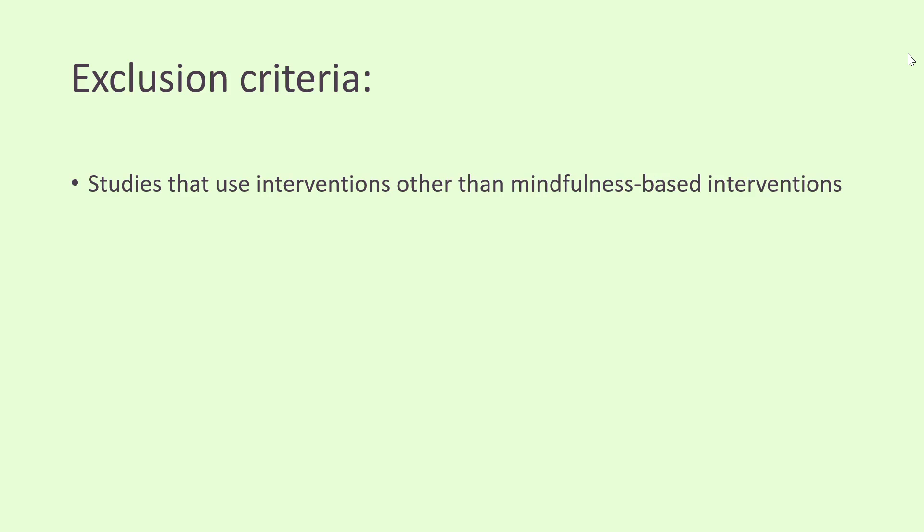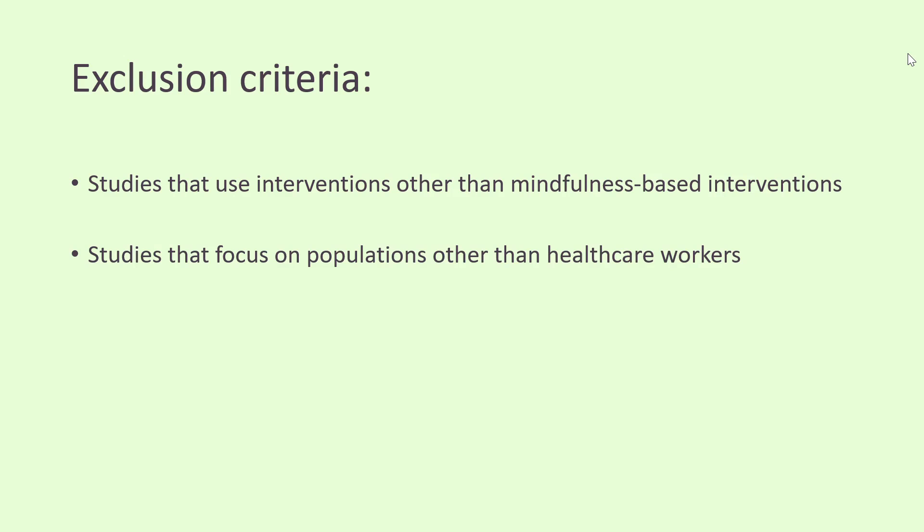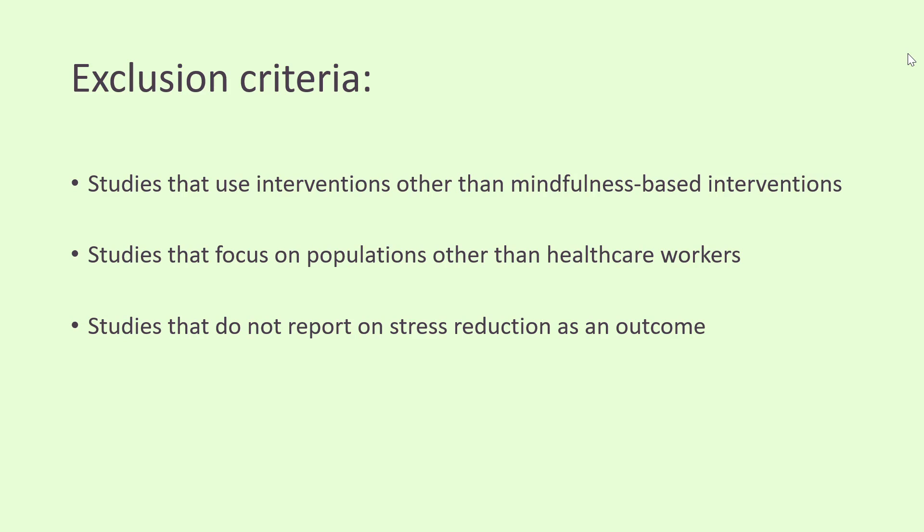On the other side, we have our exclusion criteria — these are the characteristics or qualities that would disqualify a study from being included. Studies that use interventions other than mindfulness-based interventions should be disqualified. We don't want to muddy the waters; we want our review to be what we call homogeneous, which means the studies in it are very similar. Sometimes your exclusion criteria will be the inverse of your inclusion criteria, so of course we don't want to look at studies that focus on populations other than healthcare workers, studies that don't report on stress as an outcome, or studies outside of the UK.